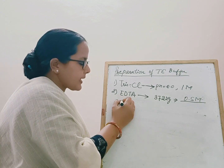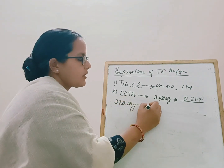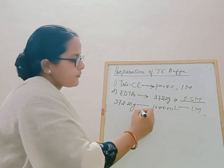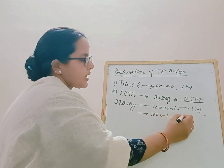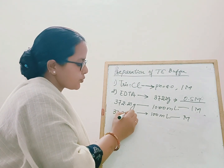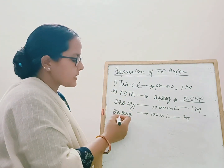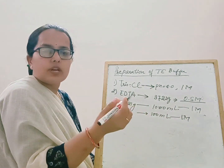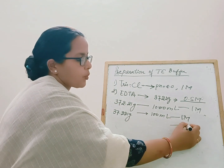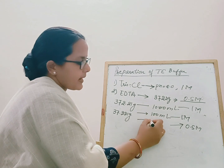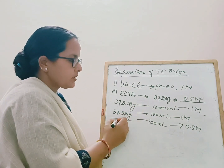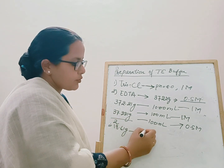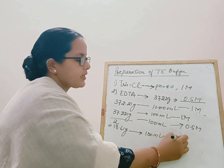To make a 0.5 molar EDTA stock: dissolving 372.2 grams in 1000 ml gives 1 molar, but since 1 molar is very difficult to prepare, we prepare 0.5 molar instead. For 100 ml of 0.5 molar EDTA, dissolve approximately 18.61 grams in 100 ml of water.